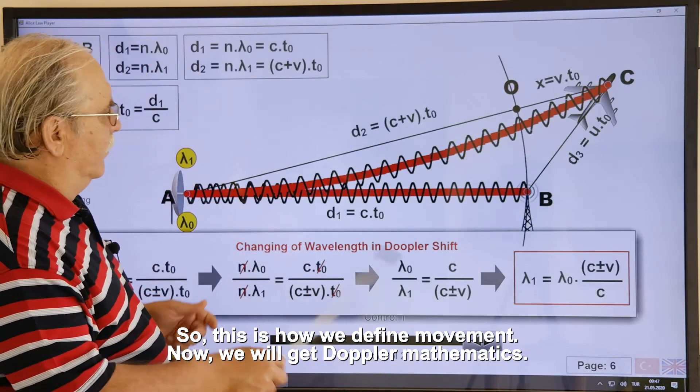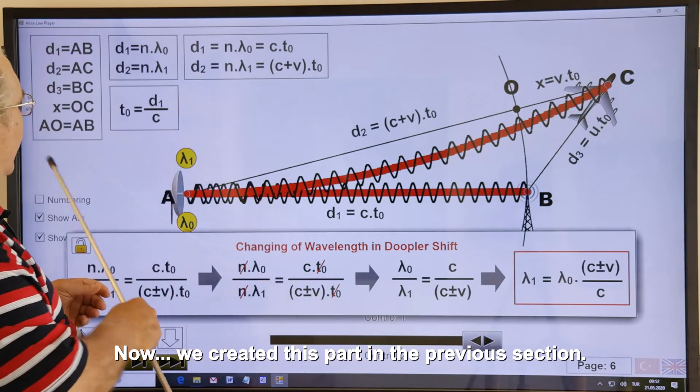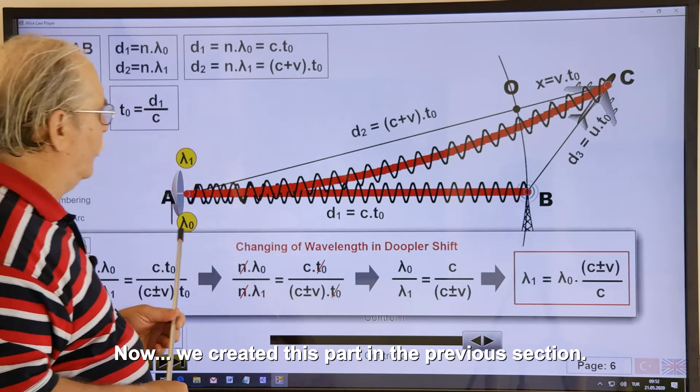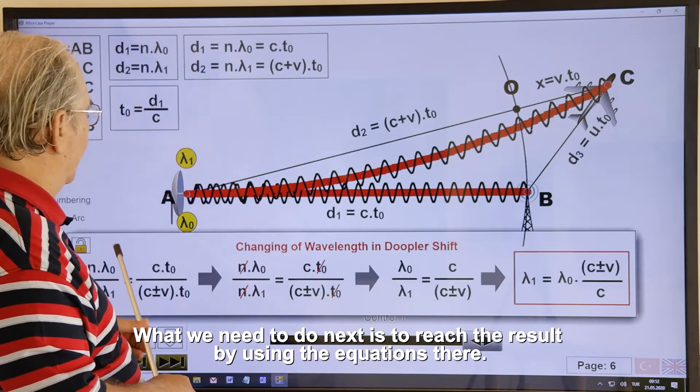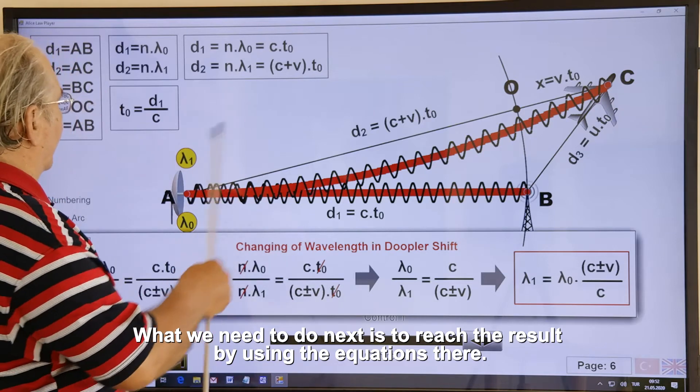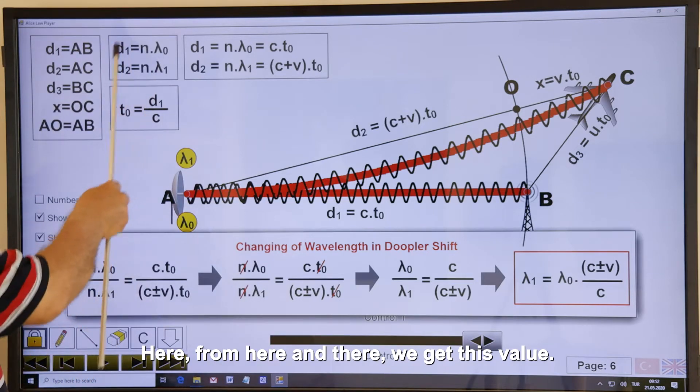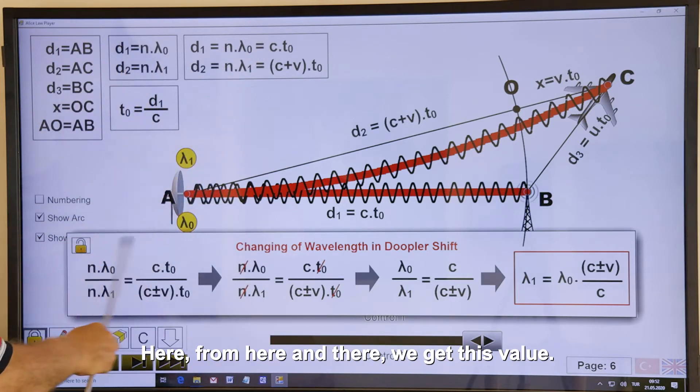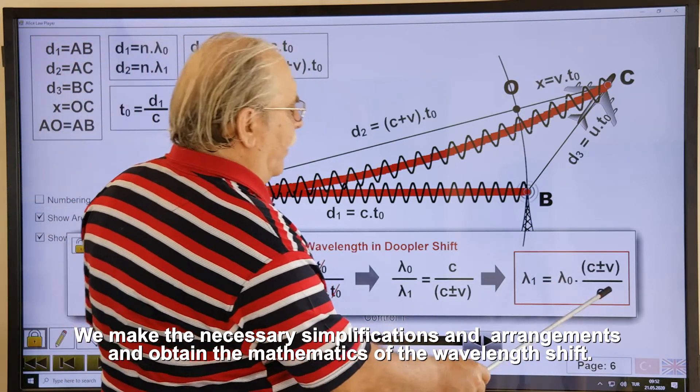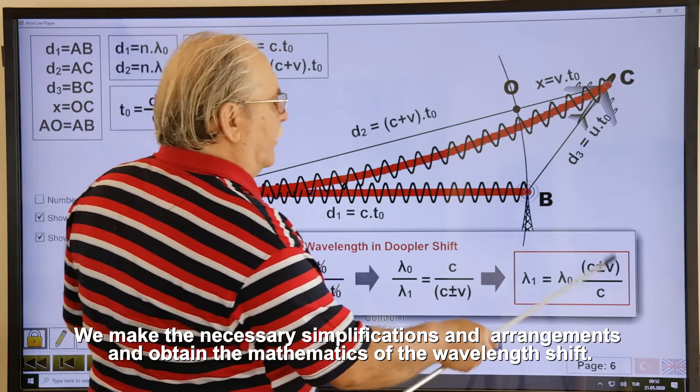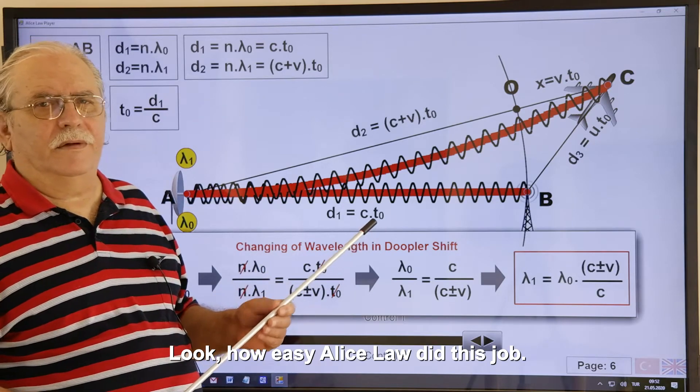Now, we will get Doppler mathematics. Now, we created this part in the previous section. We also created this triangle. What we need to do next is to reach the result by using the equations there. Here, from here and there, we get this value. We make the necessary simplifications and arrangements. And obtain the mathematics of the wavelength shift. Look, how easy Alice Law did this job.